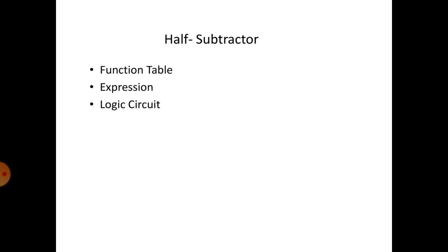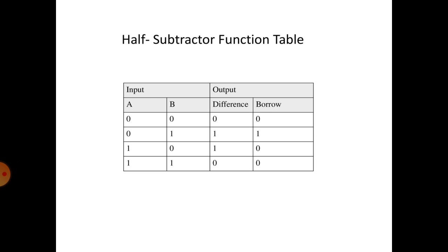The half subtractor has a function table, expression, and logic circuit. This is a truth table for half subtractor. Here we are having two inputs A and B, and two outputs: difference and borrow. Half subtractor is a combinational circuit which is used to subtract two binary bits.